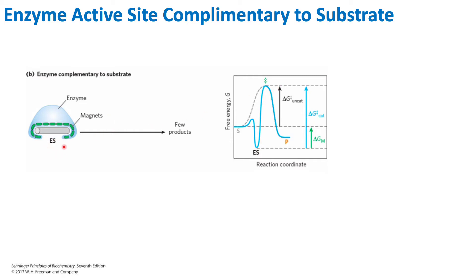Looking over here, we can see this magnet — this is our substrate — and we have this enzyme, and we can see how that substrate fits perfectly into our enzyme. This means that the active site of this enzyme is complementary; it is the same as the substrate, so the substrate is able to bind. Now we can imagine that if the active site is complementary, this is going to form a very stable interaction between the two.